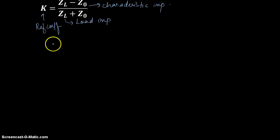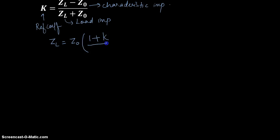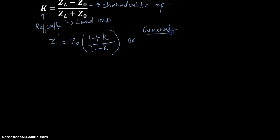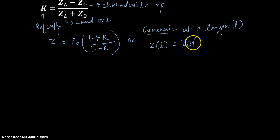This equation can be rewritten in terms of ZL. ZL is equal to Z naught times 1 plus k divided by 1 minus k. Or in a general format, at a particular length L, the value of impedance can be written as Z naught times 1 plus the reflection coefficient at that length divided by 1 minus k.